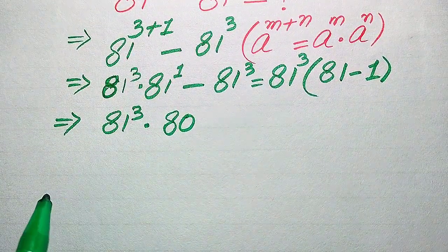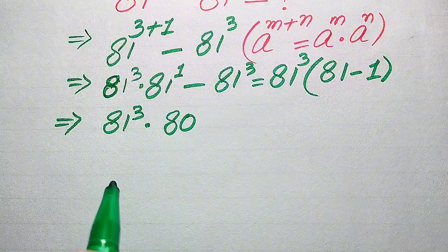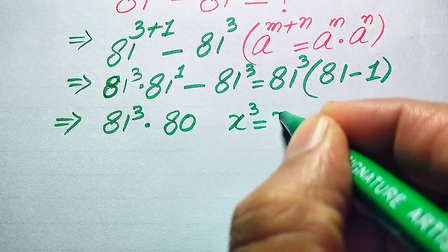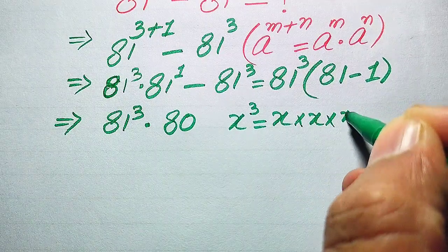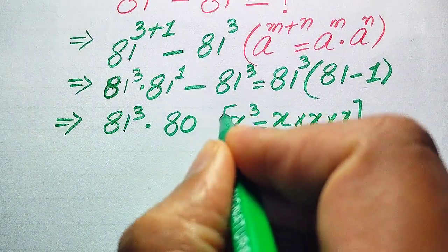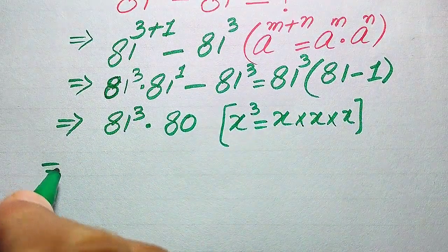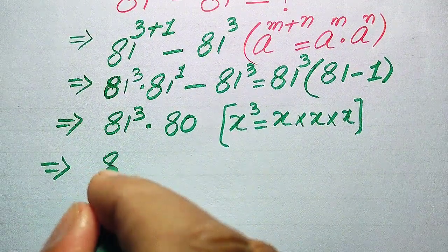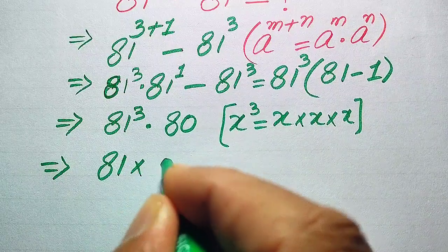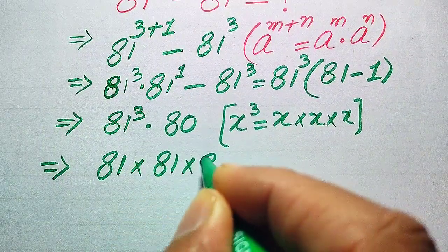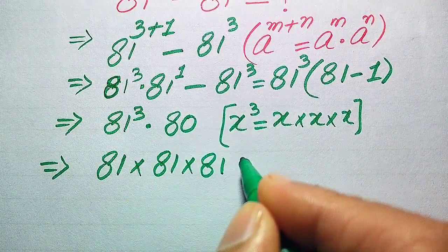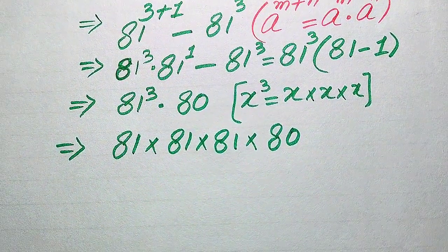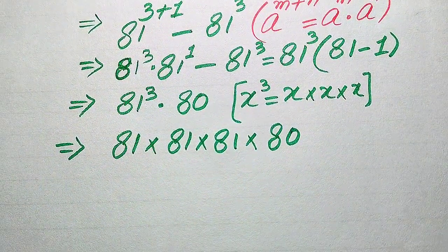Our next target is to find the cube of 81. Just as x cubed means multiplying x three times, 81 cubed means multiplying 81 three times: 81 multiplied by 81 multiplied by 81. This result is then multiplied by 80, so we need to multiply these four numbers.